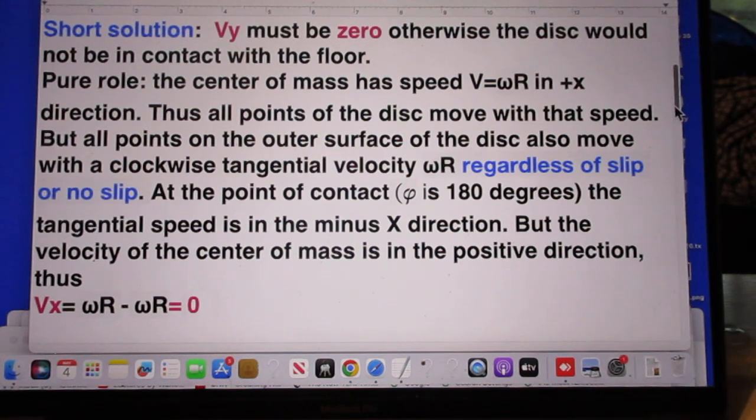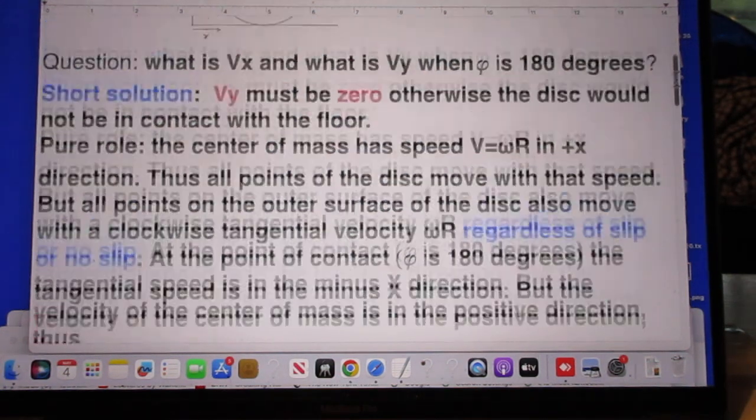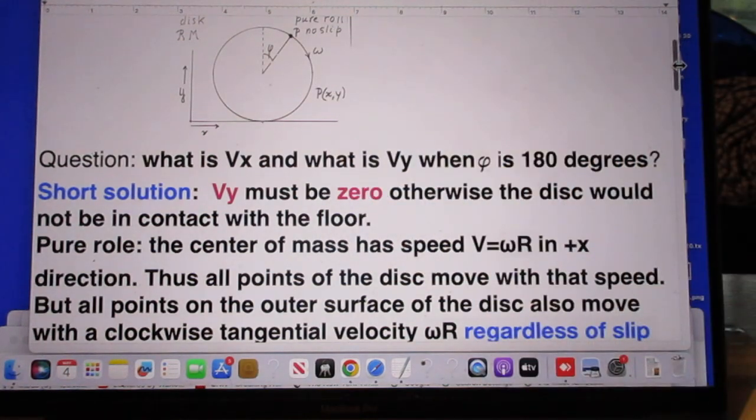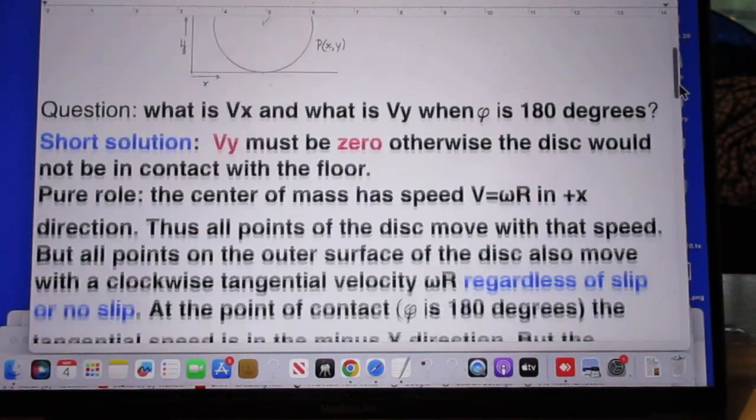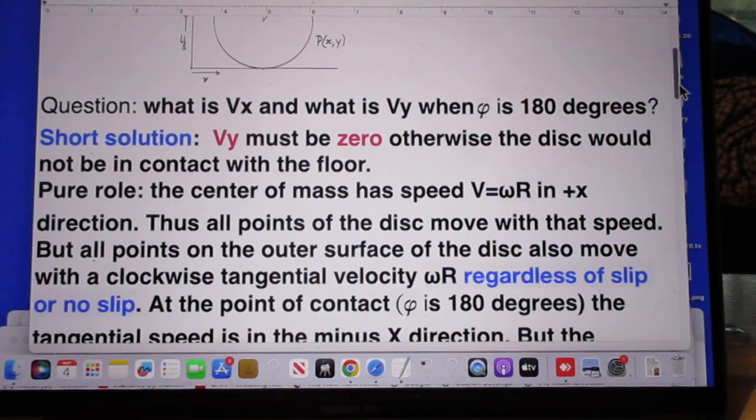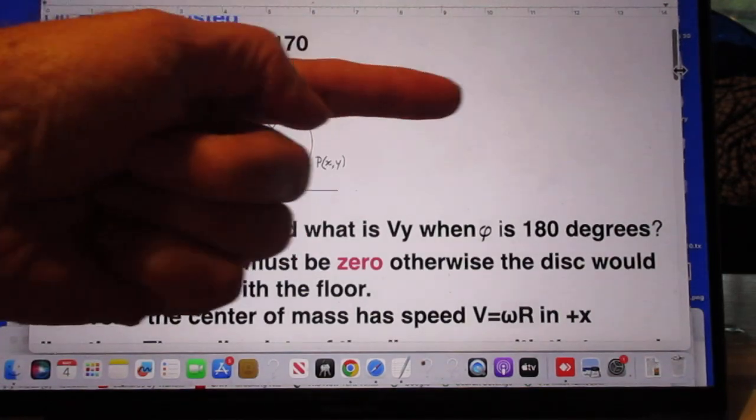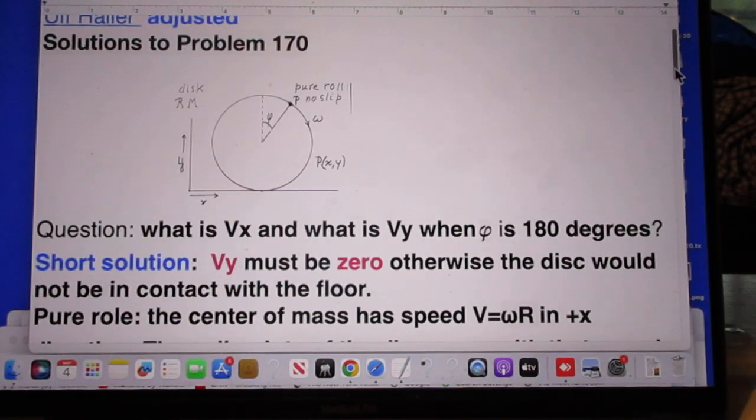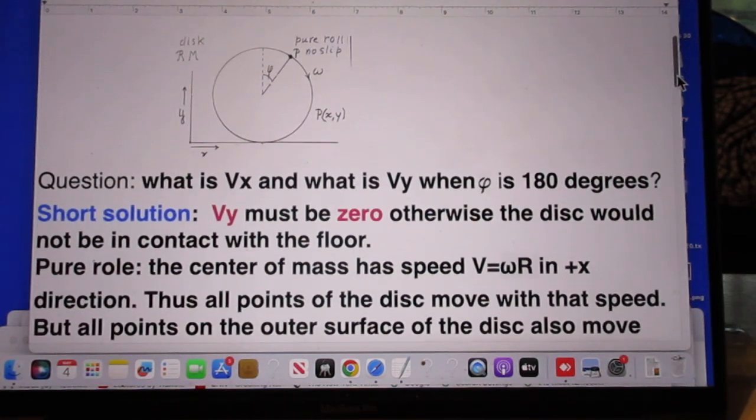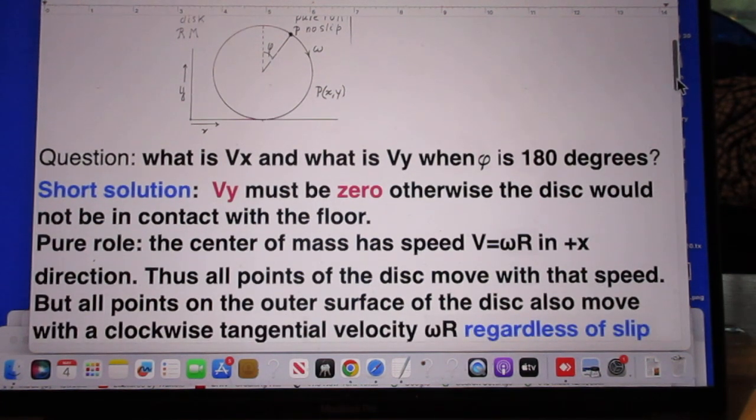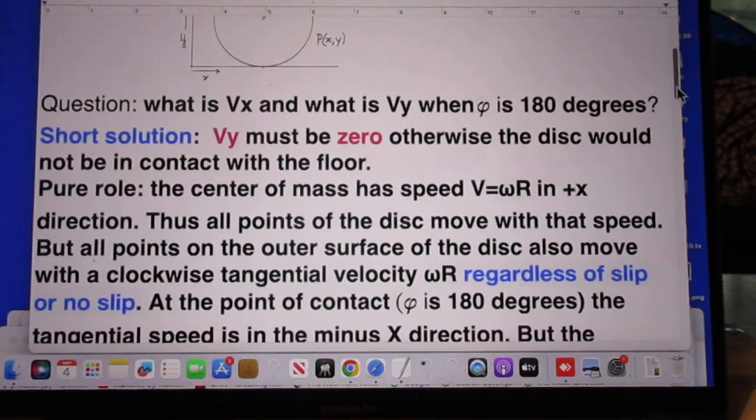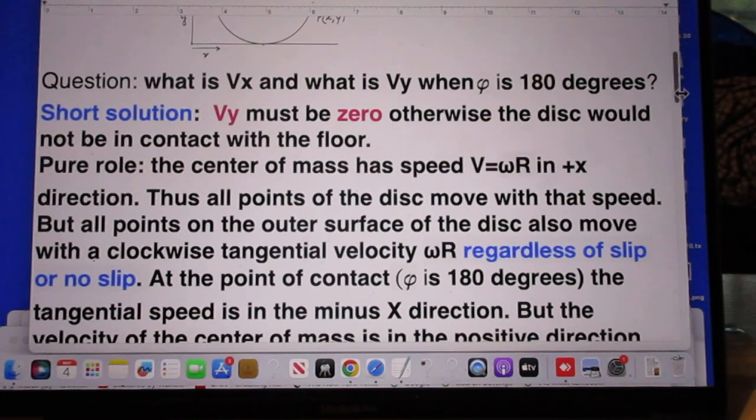Let's now discuss Vx. We have pure roll. That means the center of mass, so that is the center of the disc, has a speed V of omega r and that V is in the plus x direction. That's the condition of no slip, pure roll.